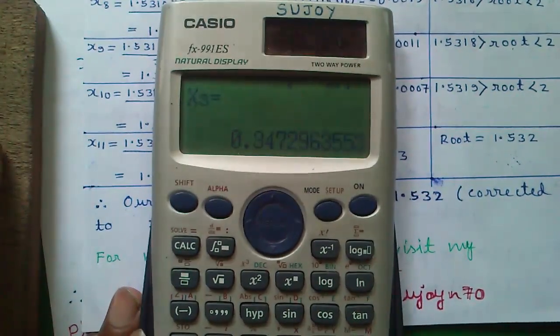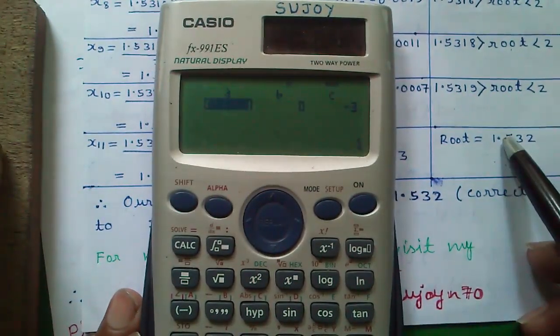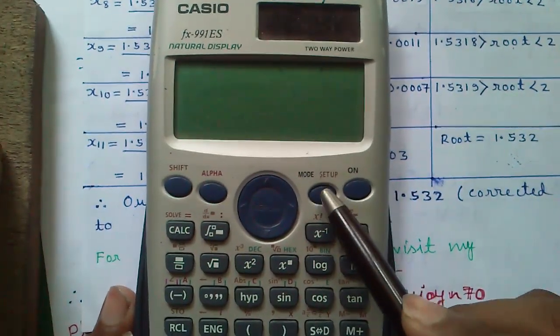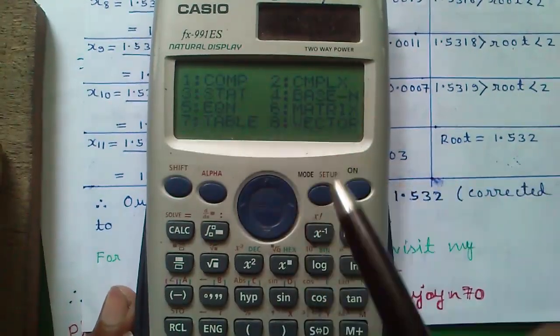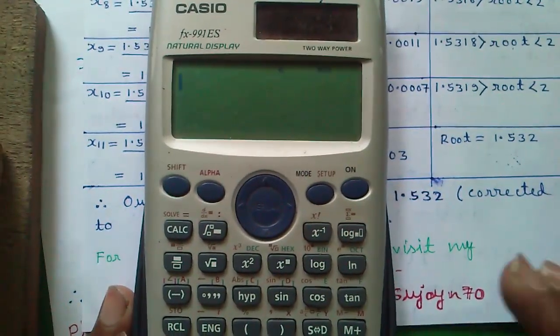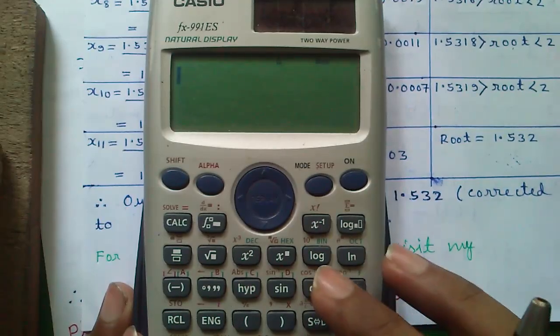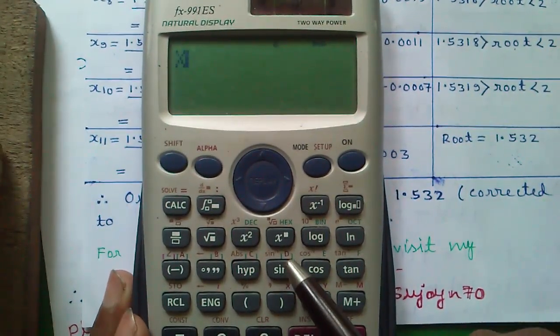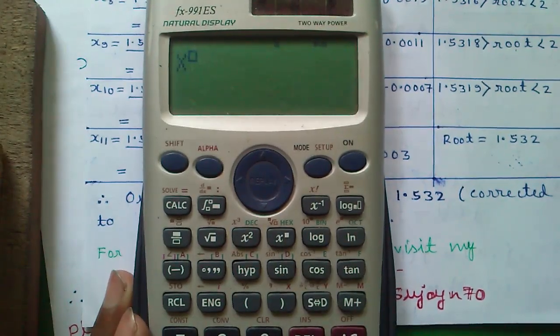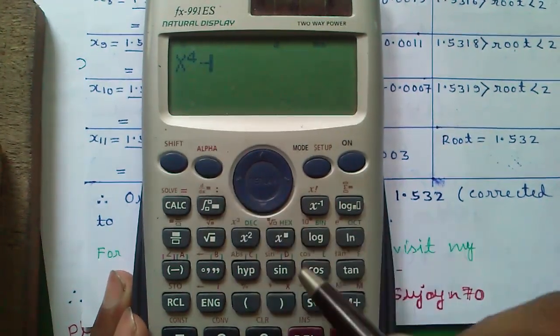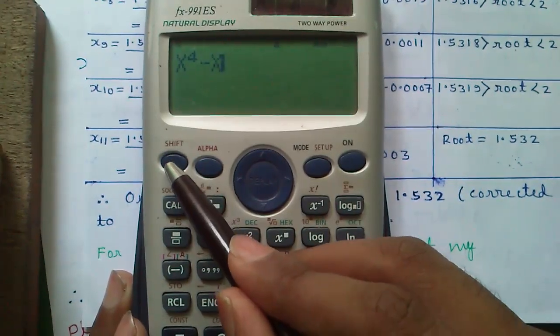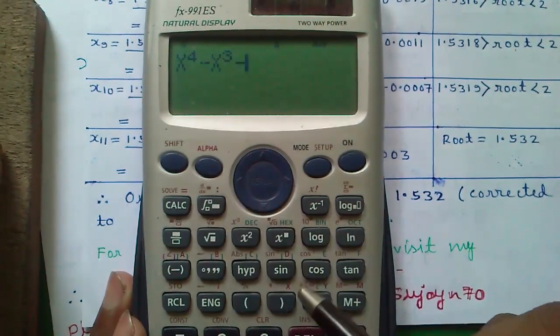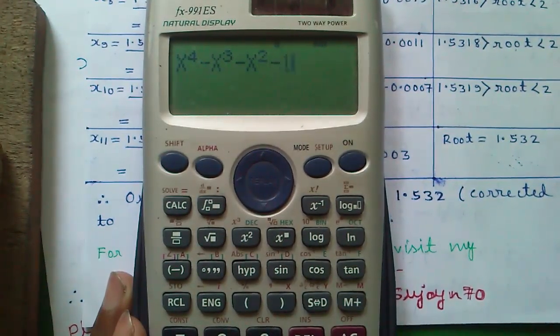But not only that, you can also solve the equations having to the power 4 also or more than that. For that, enter mode and press 1 for computational mode. And let's enter an equation. So press alpha and this button for x. Press this button for to the power. So x to the power 4 minus x. Press shift and square button to get cube. Minus x square minus 10.